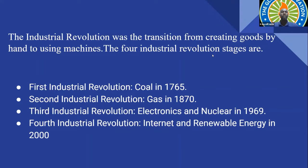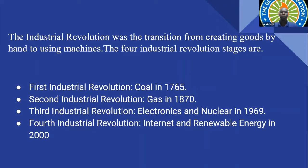The industrial revolution was the transition from creating goods by hand to using machines. The four stages are: the First Industrial Revolution, where people used coal to generate power, around 1765; the Second Industrial Revolution, involving gas and oil, around 1870; the Third Industrial Revolution, focused on electronics and nuclear power, in 1969; and the Fourth Industrial Revolution, focused on internet and renewable energy resources, starting around 2000.